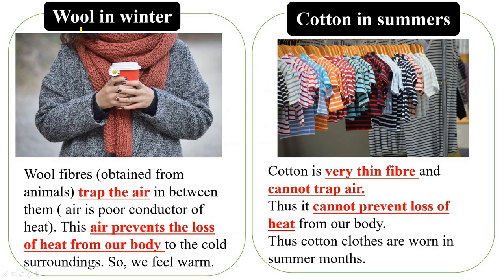This is the same reason why we wear wool in winter and cotton in summers. Wool fibers trap air, and since air is a poor conductor of heat, it prevents the loss of heat from our body to the cold surroundings and we feel warm. Cotton is a very thin fiber that cannot trap air, so cotton cannot prevent heat loss — that's why cotton clothes are worn in summer months.